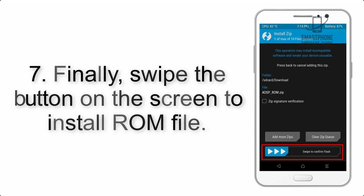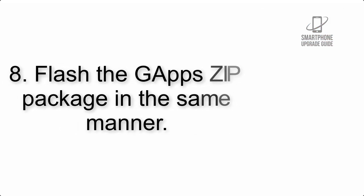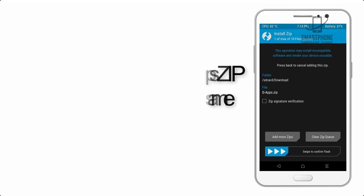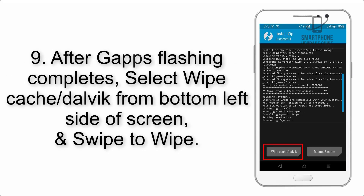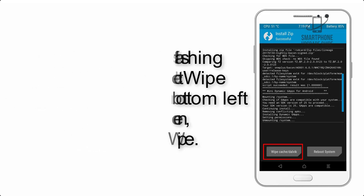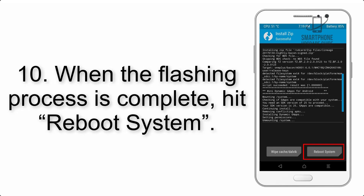Step 8: Flash the GApps zip package in the same manner. Step 9: After GApps flashing completes, select Wipe Cache and Dalvik from the bottom left side of the screen and swipe to wipe. Step 10: When the flashing process is complete, hit Reboot System.